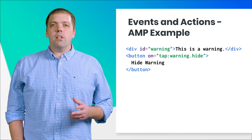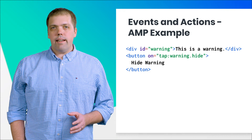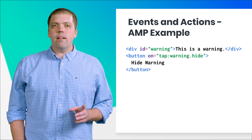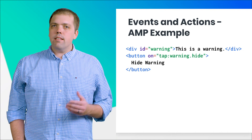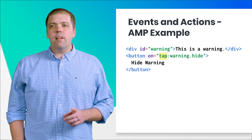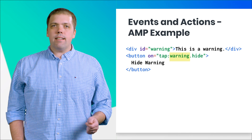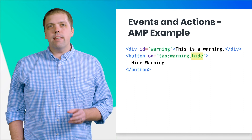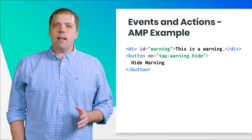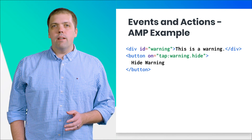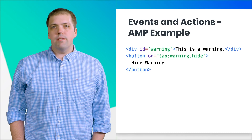And in AMP, the code looks like this. We assign the event handler using the on attribute. The key part here is tap:warning.hide. Let's unpack that: 'tap' is the event, 'warning' is the ID of the component to act upon, and 'hide' is the action to perform. When the user clicks the button, the tap event is triggered and the event handler runs and hides the warning message.